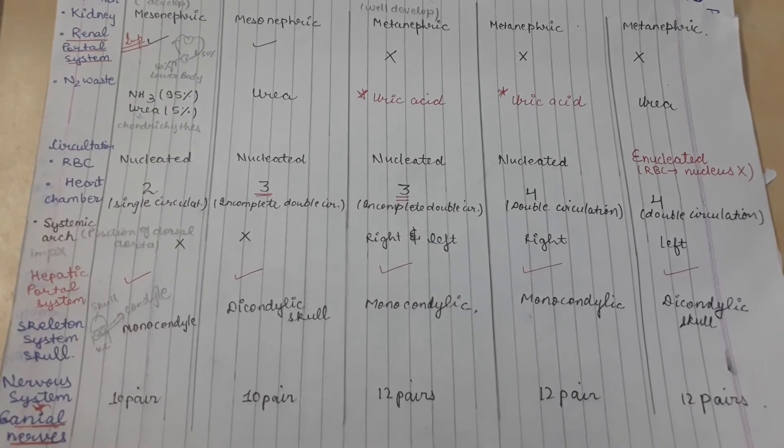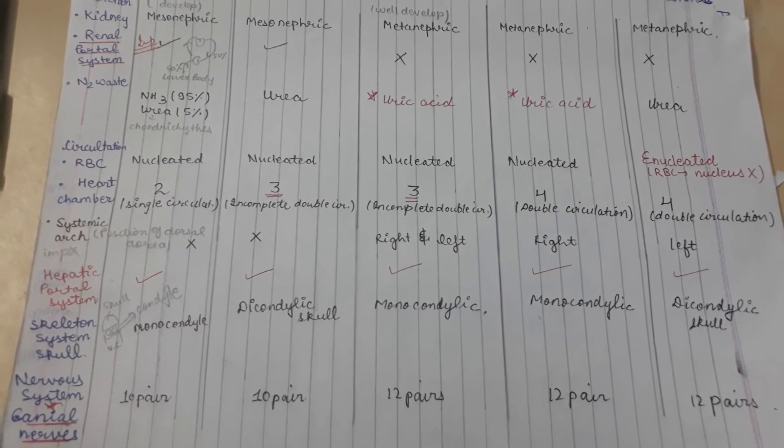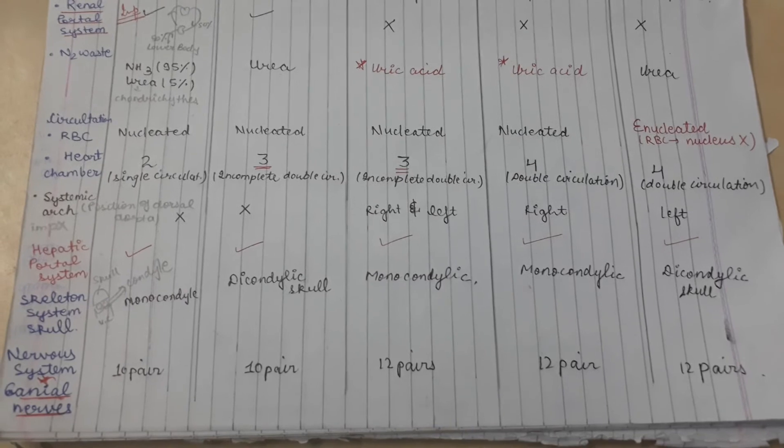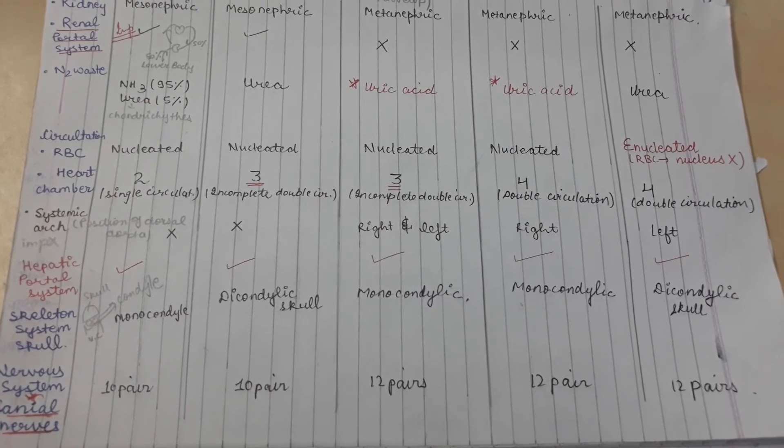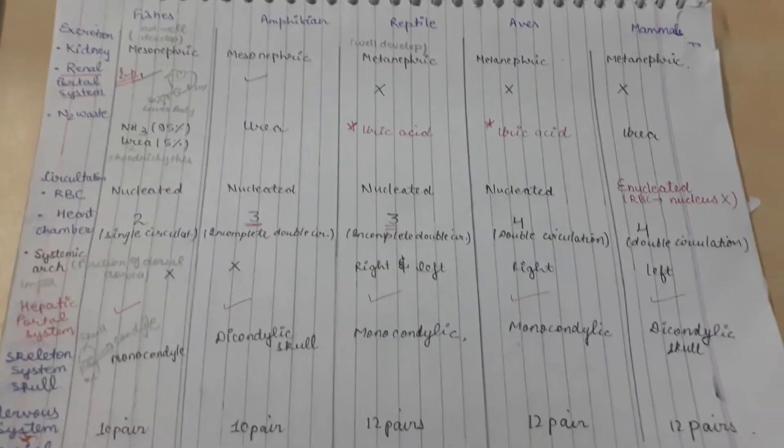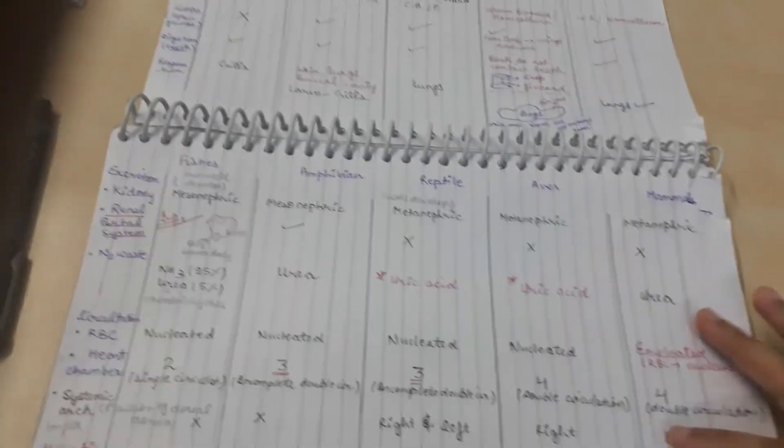Nervous system: the number of cranial nerves. Reptiles, aves, and mammals have 12 pairs, while fishes and amphibians have 10 pairs each.